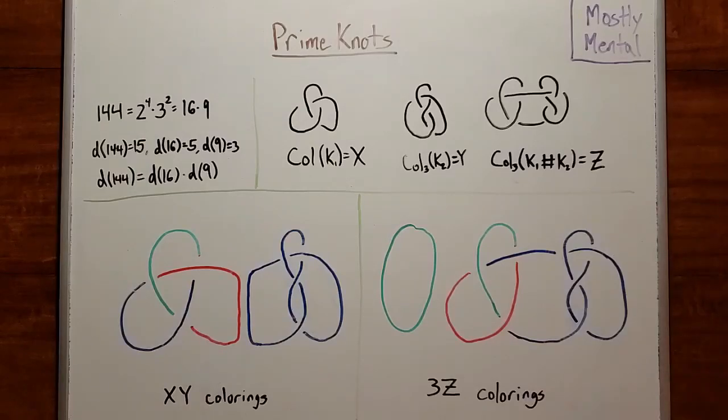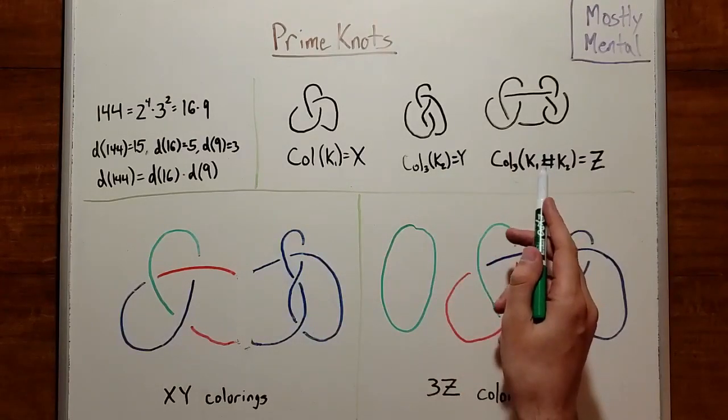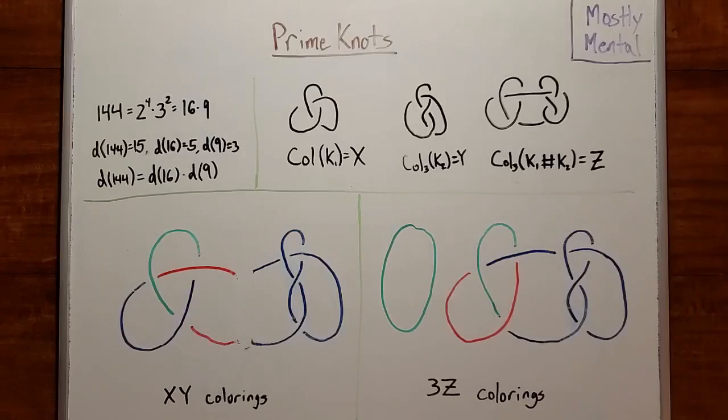Well, suppose we have a coloring of this knot, and a coloring of this one. And these are independent colorings, so we can do this in x, y ways. Now let's take some strand on each of them and cut it. It would be nice if we could just stitch these loose ends together and have a valid coloring, since then we would have a clear correspondence between colorings of the individual knots and colorings of the sum. But the trouble is, these strands might be different colors.